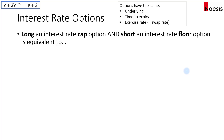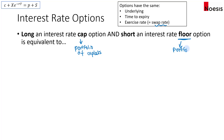Next, what if we long an interest rate cap option and short an interest rate floor option? What would that be equivalent to? The exercise rate for the cap and floor would be set equal to the swap rate. Caps are a portfolio of caplets, and caplets are interest rate call options. A floor is a portfolio of floorlets, and each floorlet is an interest rate put option. So when you long a cap, that means you long the cap and short the interest rate floor.